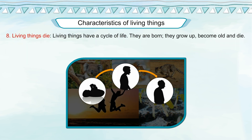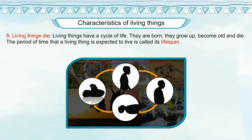Living Things Die: Living things have a cycle of life. They are born, they grow up, become old and die. The period of time that a living thing is expected to live is called its life span.